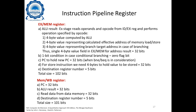Finally, we need the destination register number, which is 5 bits, because we need to know where we are putting the loaded memory value — into register RT or RD. So in totality, A plus B plus C plus D plus E gives a total size of 102 bits. Therefore, the EX/MEM pipeline register is 102 bits in total.